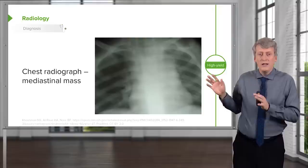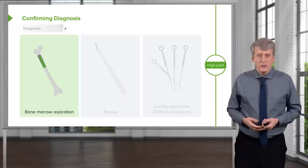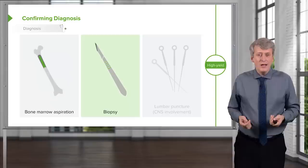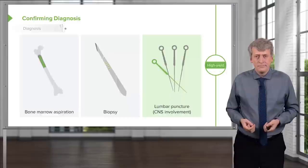For radiology, we usually get a chest X-ray, which can often show a large mediastinal mass — as you can see in this patient with a widened mediastinum. To confirm the diagnosis, we perform a bone marrow aspiration and biopsy to obtain bone marrow tissue, which is sent for cytology to identify the type of cancer. We will also often do a lumbar puncture to inspect for CNS involvement, especially in ALL.